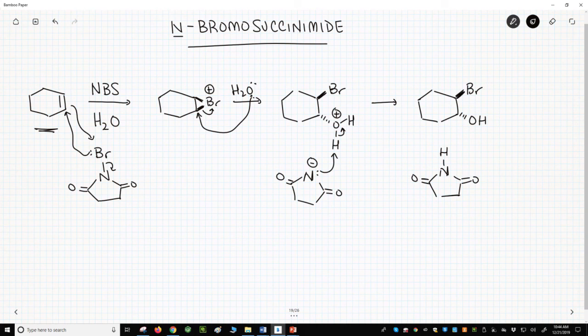So NBS is often used to make bromohydrins. There is a chlorine version called NCS or N-chlorosuccinimide. It works well to make chlorohydrins. That's the story on NBS. While we've seen how it can make bromohydrins, NBS is actually a very versatile reagent, and we'll encounter it in other reactions as well.